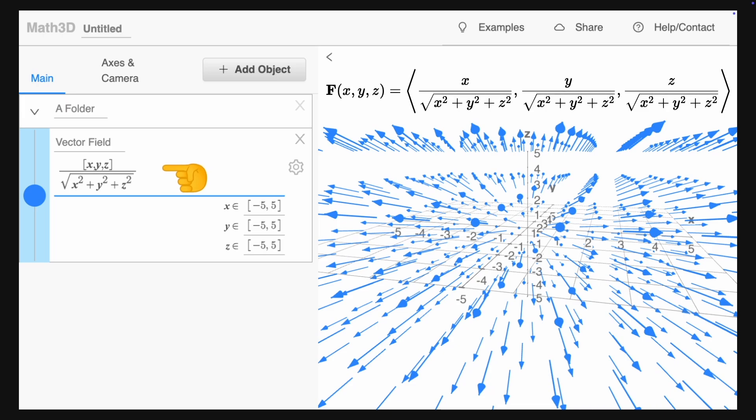So for example, this expression corresponds to this vector field. Again, we have the square root as a common factor, which is easier to type compared to this long expression.